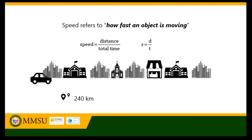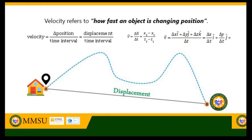For instance, a car travels 240 kilometers in three hours — we say its average speed is 80 kilometers per hour. On the other hand, velocity describes an object's motion based on the time rate of change in position. It refers to how fast an object is changing position, given by the equation: displacement divided by total time.